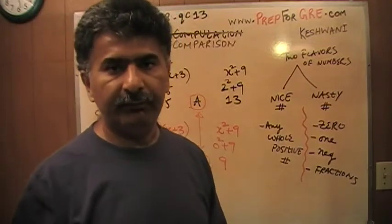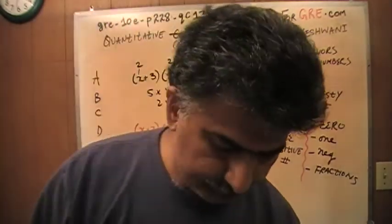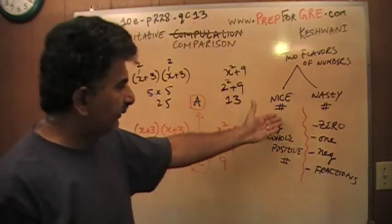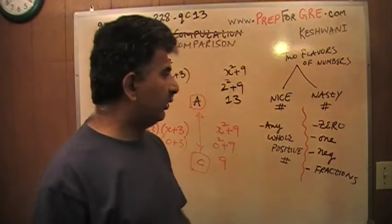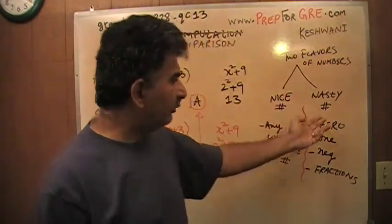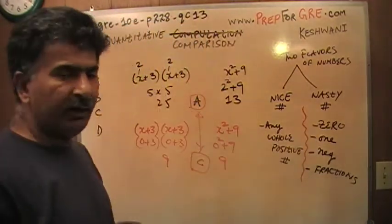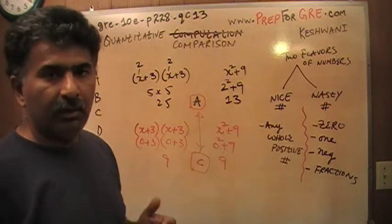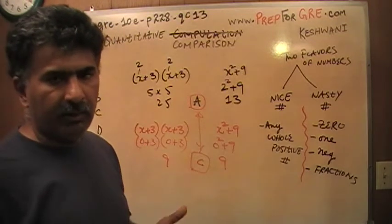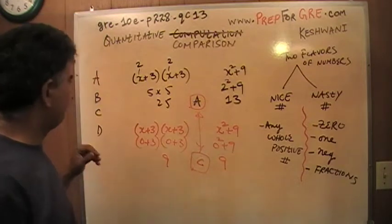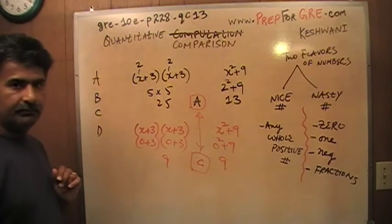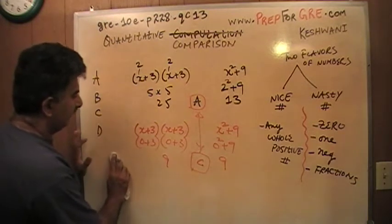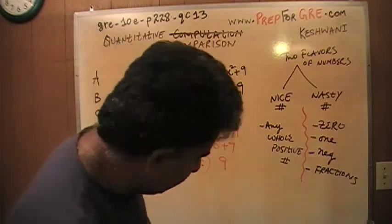The correct answer is D. You just have to plug in numbers and don't just plug in nice numbers — make sure you cover your bases. You don't have to try all four nasty numbers; as soon as I plugged in zero and got a conflicting answer, I was done. If I had gotten the same answer I would have tried one or two more times, but here the answer is D.